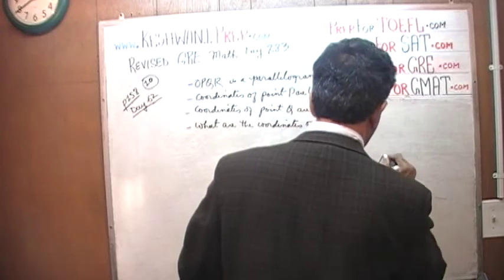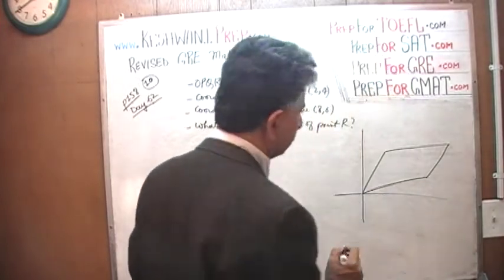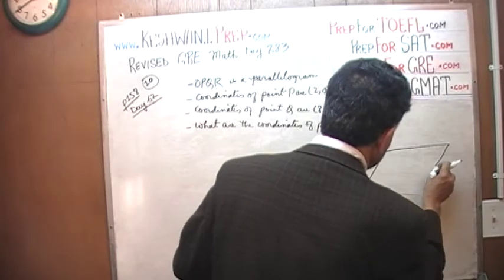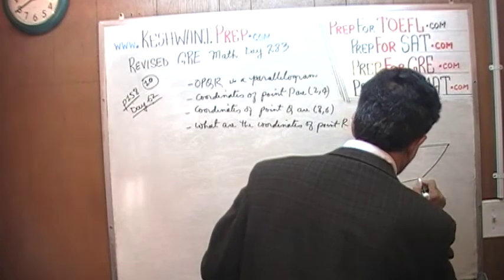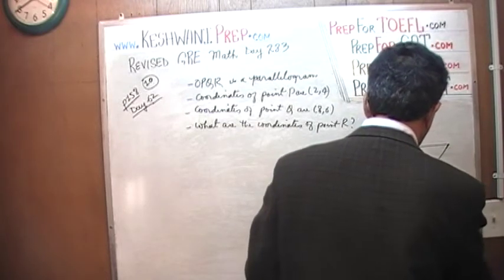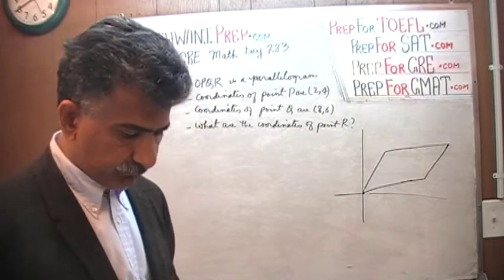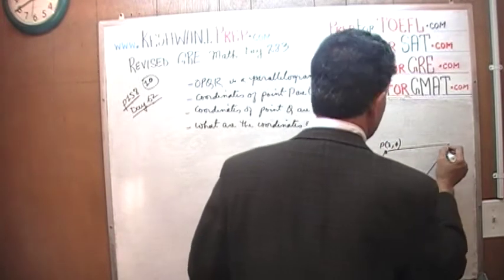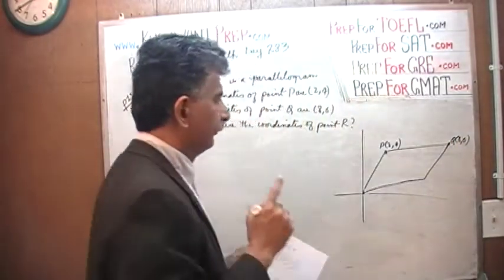And here is our parallelogram. It looks something like this. Let me redraw it a little bit better. There. It's close enough. We are told that point P has a coordinate of 2 and 4. We are also told that this point has coordinates of 8 and 6.